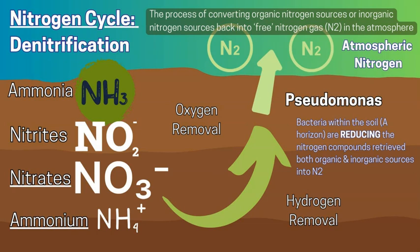Bacteria therefore play an extremely important role not only in the acquisition and transformation of nitrogen, but also in its removal from the soil to maintain balance. Too much of one thing will create an imbalance, bringing the soil, plants, and atmosphere out of equilibrium. These bacteria are important for putting nitrogen back into the atmosphere.